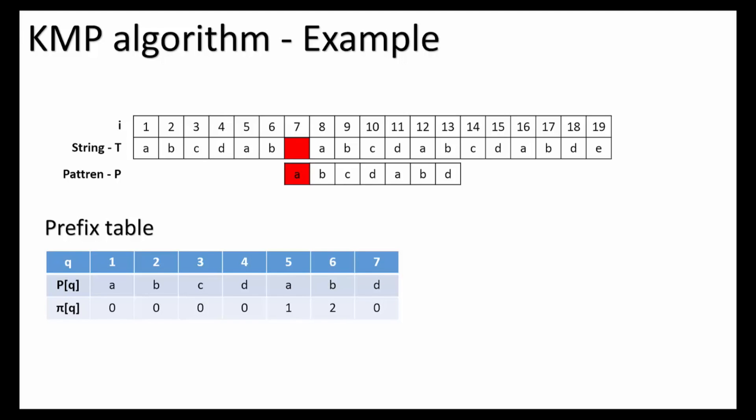Now we can see the first character in P is a mismatch, so we just shift one time to the right. Now we compare the characters one by one. As we can see, six characters a, b, c, d, a, b are successfully matched.